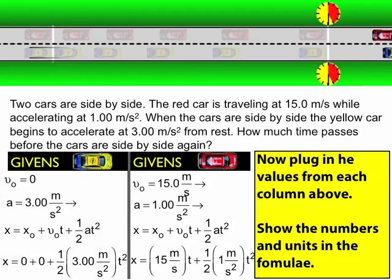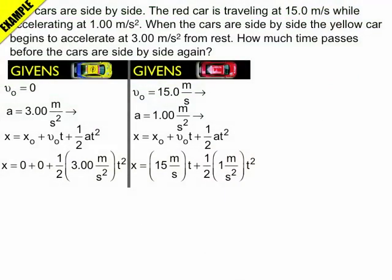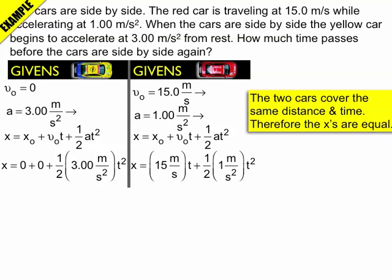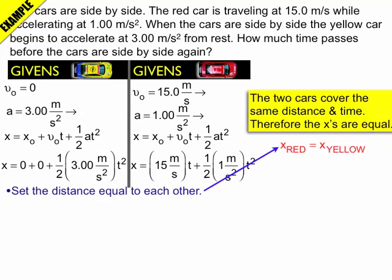Now I need to be able to solve these two problems. So what I know about this problem is I know the two cars cover the same distance in the same amount of time, so T and X for each equation are the same. What this means is that the distance the red car travels is the same as the distance the yellow car travels.